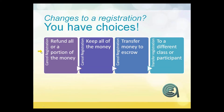Number one, you can cancel the registration and refund all or a portion of the money based on your refund policy. Number two, you can cancel the registration and keep all of the money — typically if somebody doesn't let you know they're not going to come and they don't show up and afterwards say they want a cancellation. You can also cancel and refund the student's money to escrow. Escrow is a great tool that allows you to track money for students without having to go through the full refund process. And finally, you can transfer a registration to a different class or a different person.